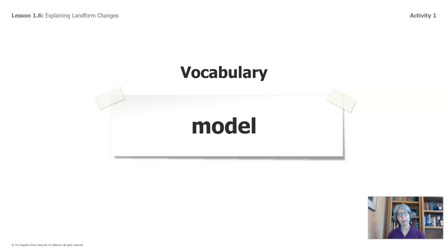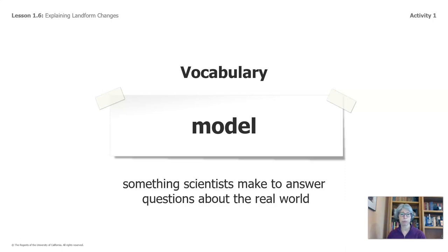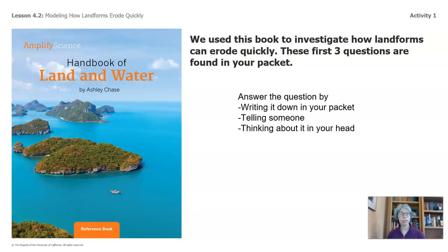Let's talk a little bit about the word model and how scientists use models. Models in science are something that scientists make to answer questions about the real world. And since we're studying how landforms change quickly, we can't really look at a landform as it's changing quickly, so we have to use a model to represent what's happening when landforms change quickly.